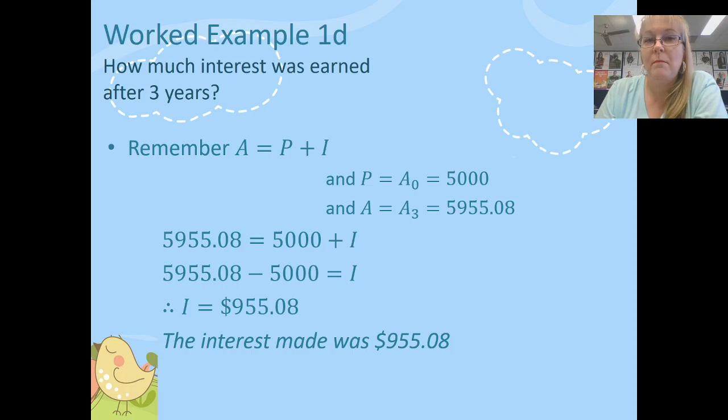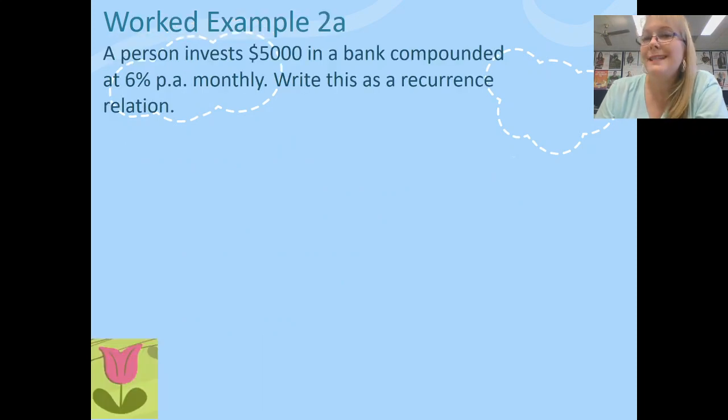Let's move on to a new worked example. This is the same figures, the same person's invested $5,000 in the bank. But instead of it being compounded yearly, it's now going to be compounded monthly. Same interest rate, 6%. We need to now change this into a recurrence relation.